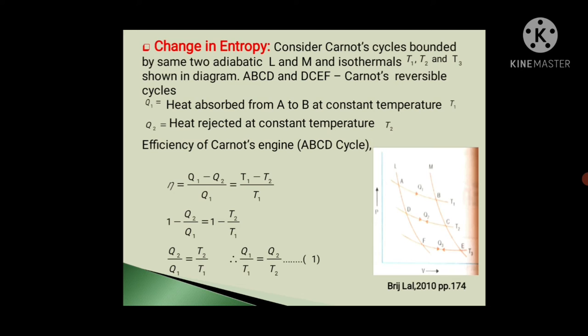So efficiency of Carnot's engine for this ABCD cycle, it is a reversible cycle. So it is given by eta equals Q1 minus Q2 upon Q1 equals T1 minus T2 upon T1.